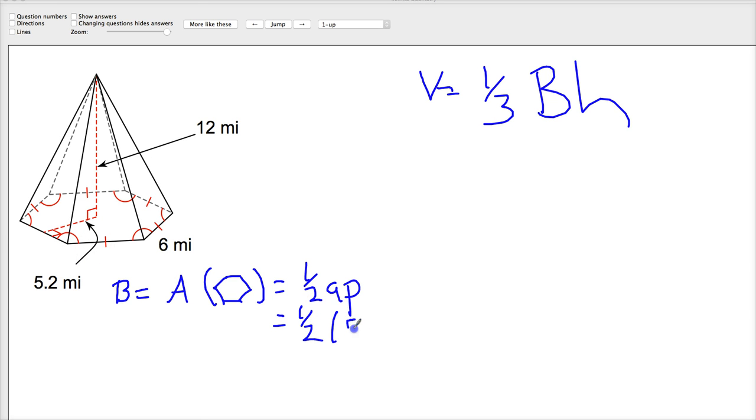The apothem is given to you, it's 5.2 miles, and then your perimeter is just six times six because there's six sides. Don't do some weirdness where you forget to multiply by six, that's a pretty common mistake. So 93.6 miles squared, that's a pretty big thing.